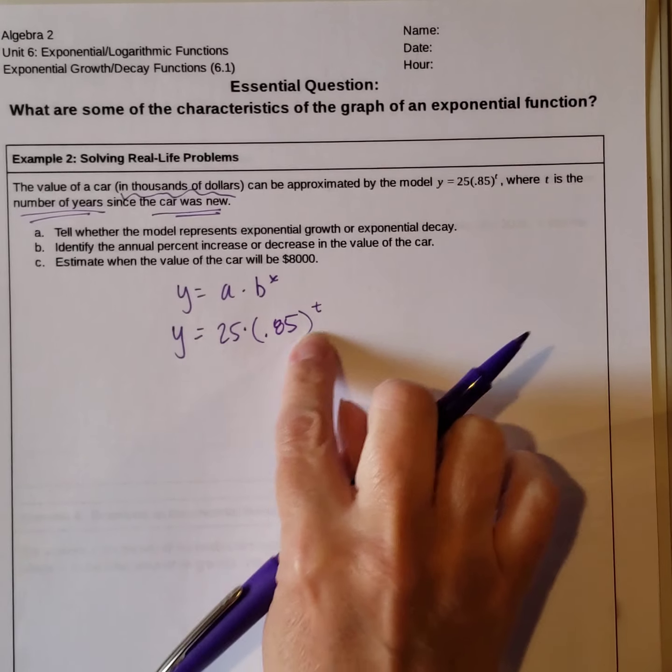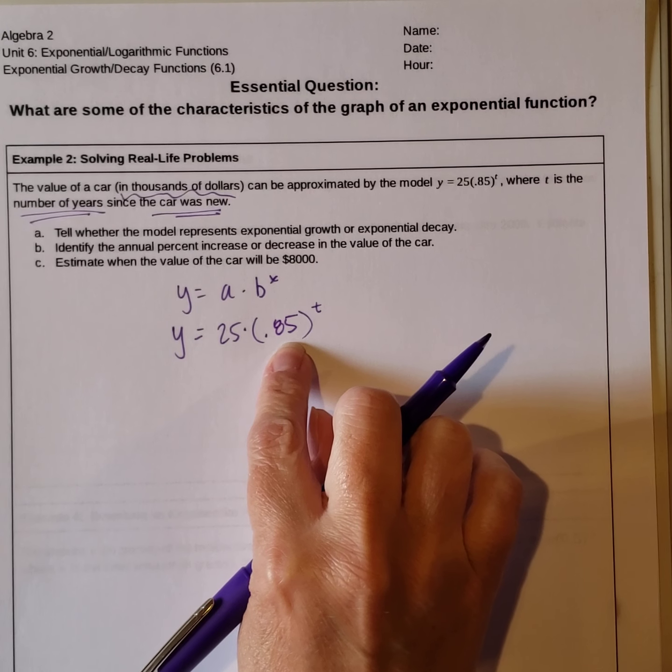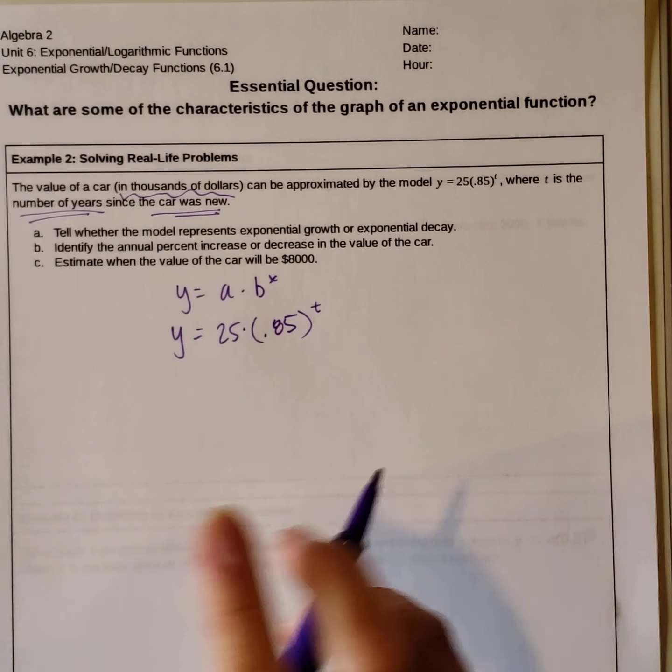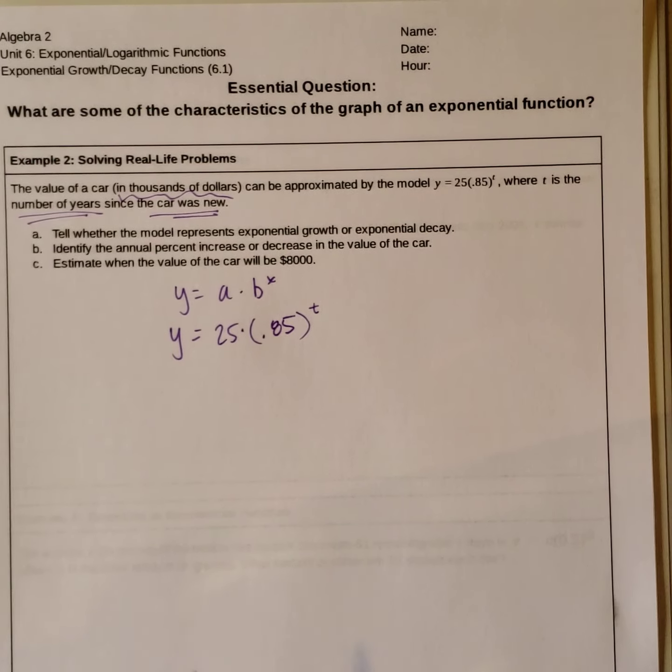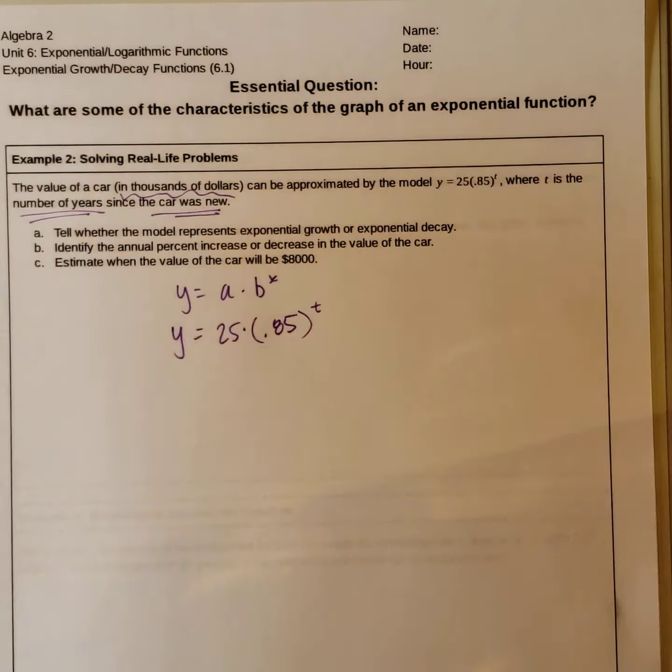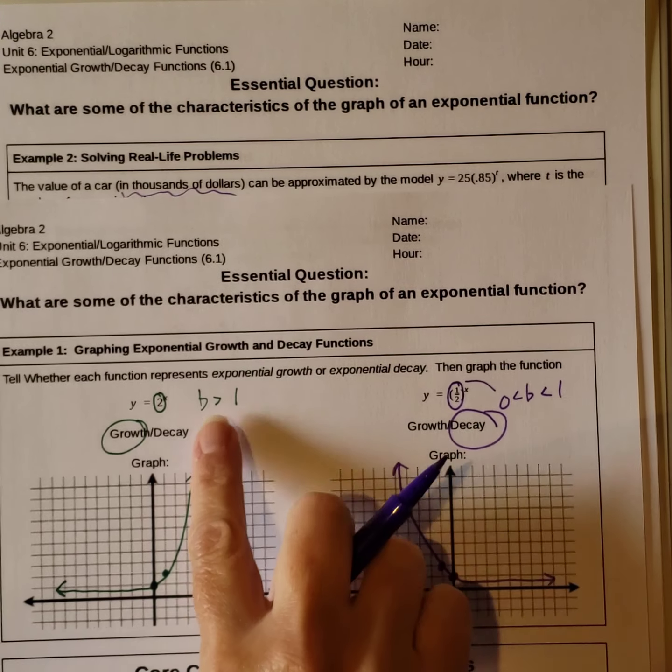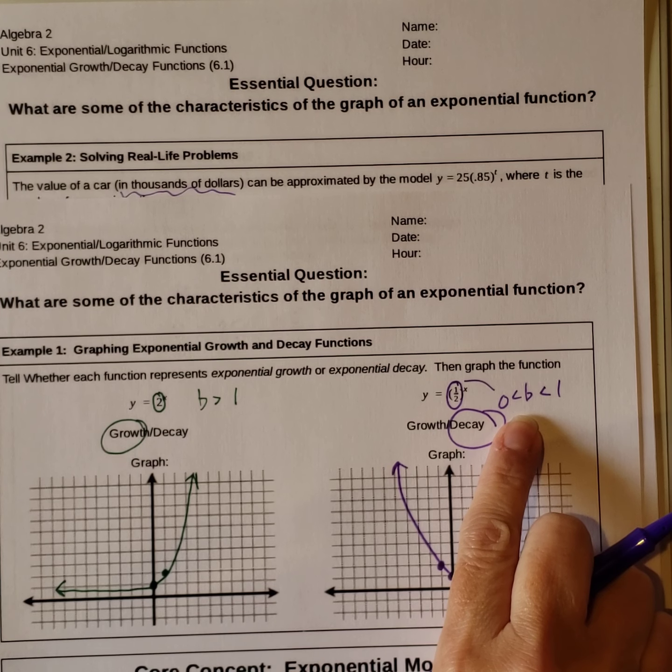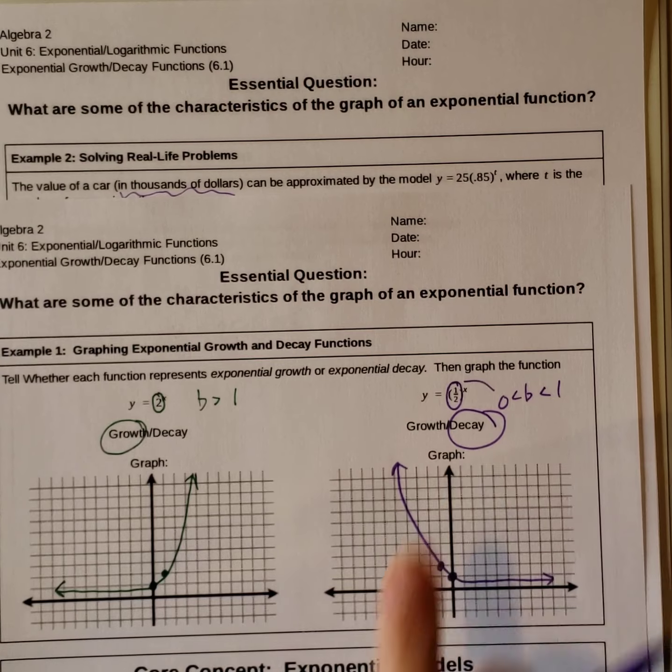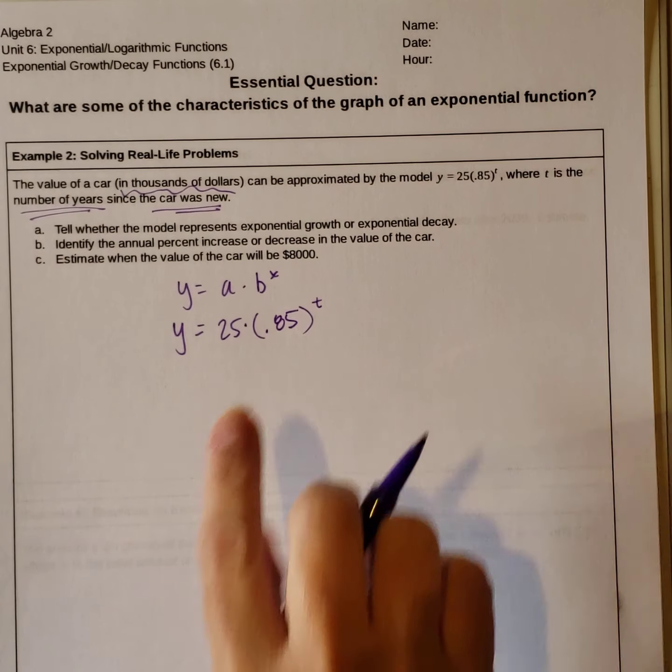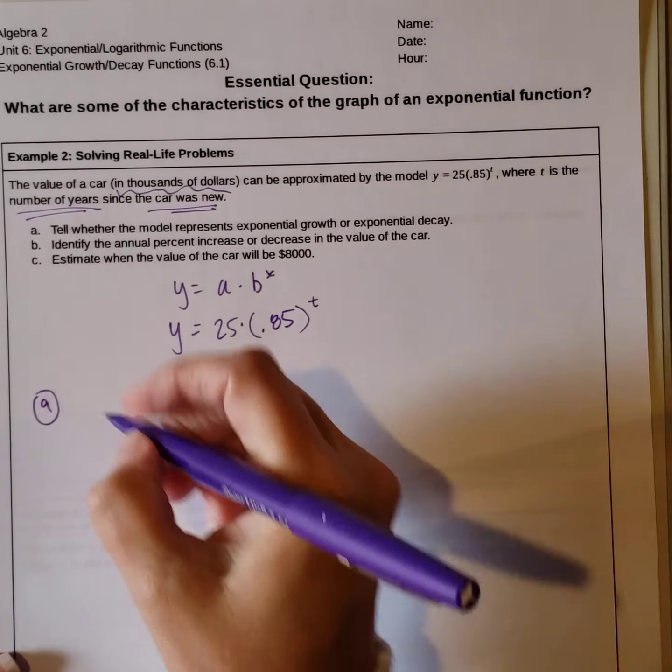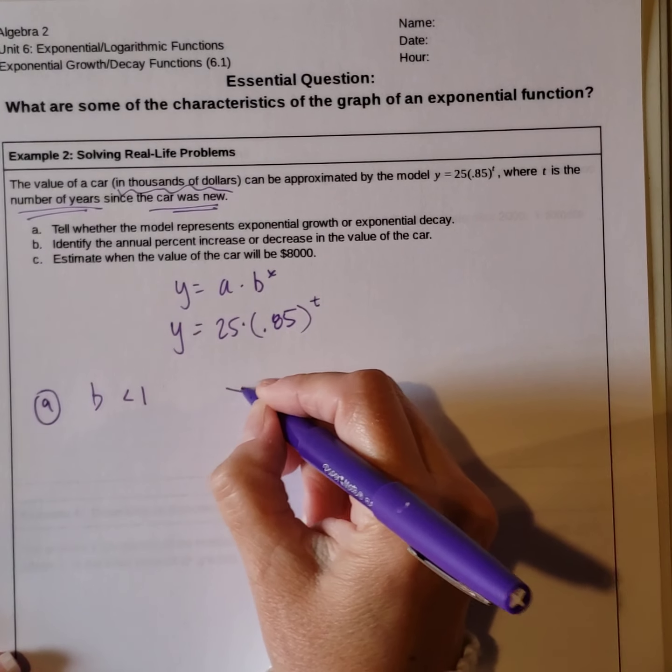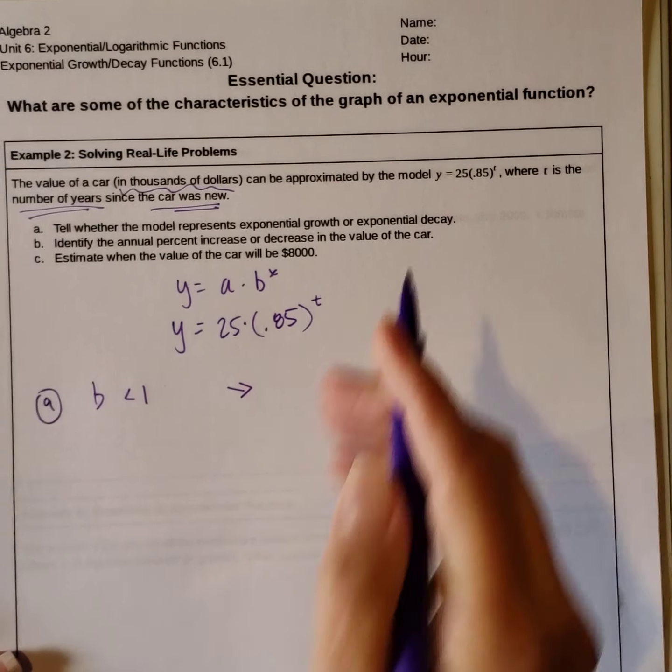b is our factor, which is the .85. And x, we've replaced it with a t because it's based on time. So in the previous models, we looked at if our b value is greater than 1, then it is growth. If our b value is less than 1 but greater than 0, it is decay. Our b value here, our b is less than 1, so what that means is that we have decay.